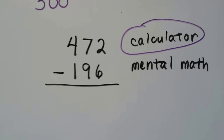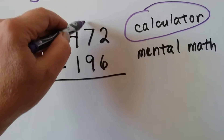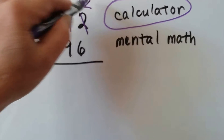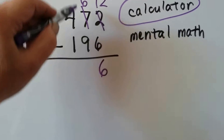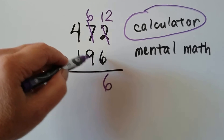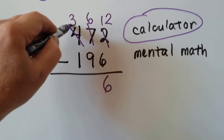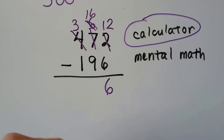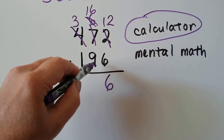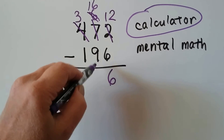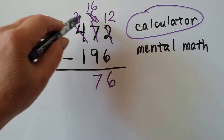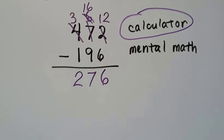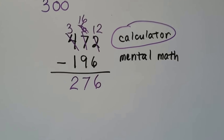We could also use pencil and paper. Two take away six - we need to regroup that seven as a six, so the two ones become twelve ones; twelve take away six is six. Then six take away nine - we need to regroup again; the four hundreds becomes three hundreds, the six tens become sixteen tens. Sixteen tens take away nine tens is seven tens, and three hundreds take away one hundred is two hundreds - we have 276. A calculator would have been easier.